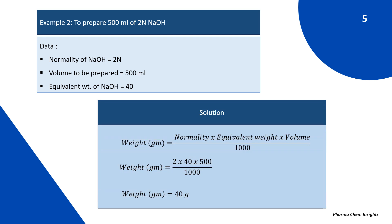According to the formula: weight in grams = normality × equivalent weight × volume ÷ 1000. That is 2 × 40 × 500 ÷ 1000. By calculating we get 40 grams. So 40 grams of NaOH is required to prepare 500 ml of 2 normal NaOH solution.